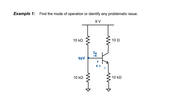Assuming that we have a 0.7 volt drop across the junction, I find that the emitter is at 3.8 volts. I can now calculate the emitter current. Using Ohm's law, I have 3.8 volts divided by 10 kilo ohms. 0.38 milliamps is flowing through the emitter.